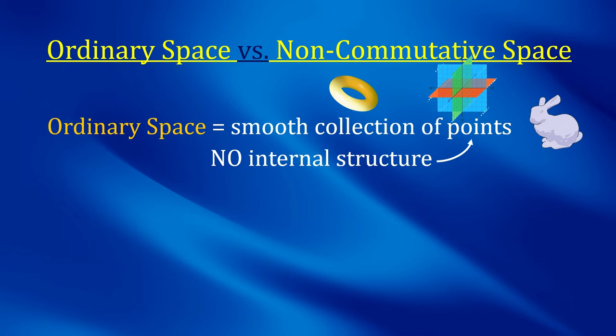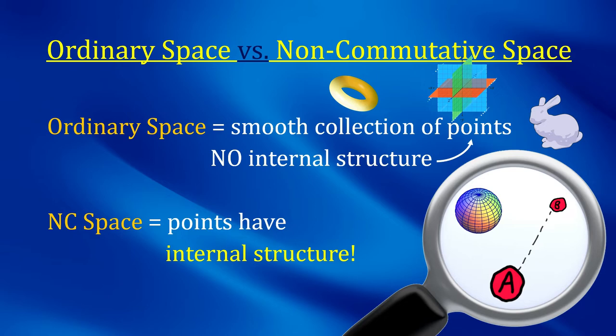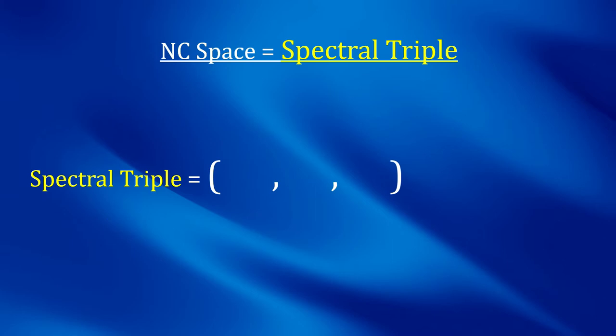On the other hand, a non-commutative space is, in some sense, a smooth collection of new objects, that we could call non-commutative points, that conversely do have a non-trivial internal structure, like a sphere, or even more simply, a pair of classical points. This internal structure will correspond to gauge symmetries of the resulting space.